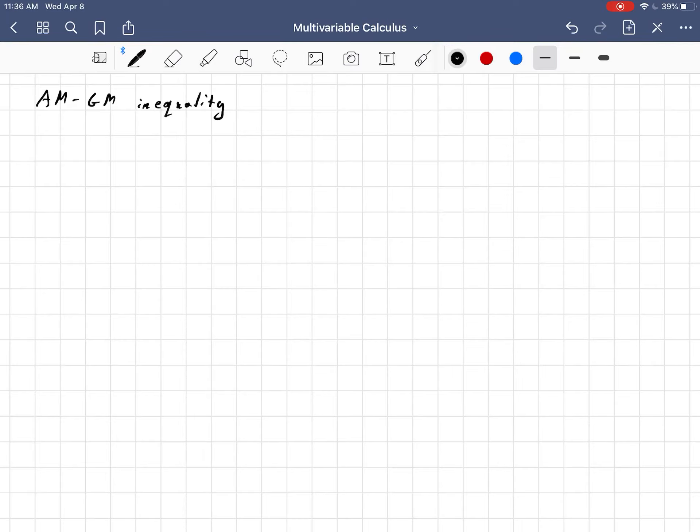It's really a pretty simple inequality. It just says that the arithmetic mean of a sequence of numbers or a set of numbers is going to be greater than or equal to the geometric mean for that same sequence of numbers.